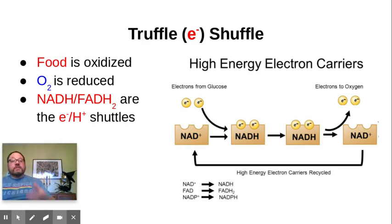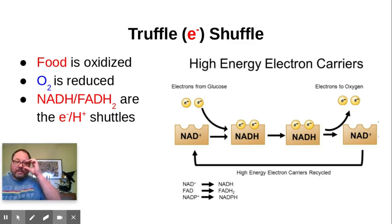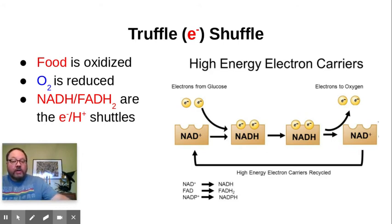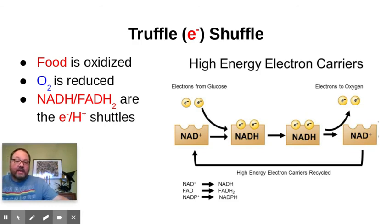Basically what happens is the food we consume gets oxidized. Think back to your chemistry days — oxidation is a loss of electrons. People remember this different ways: 'Leo goes ger' — losing electrons is oxidation, gaining electrons is reduction. Or 'oil rig' — oxidation is a loss, reduction is a gain in electrons. Your food becomes oxidized, meaning it loses electrons, and then ultimately oxygen — that molecule we breathe in — is going to be reduced, gaining those electrons. An important shuttle in this process is NADH and its relative molecule, FADH2.